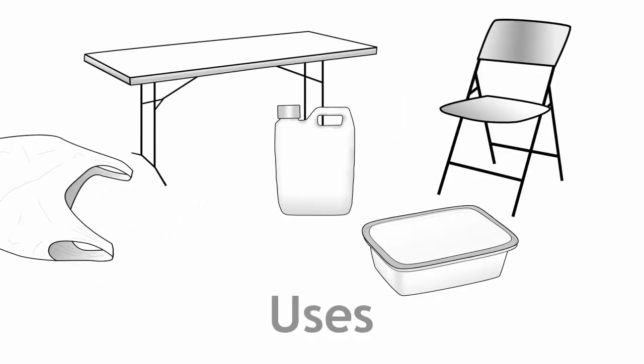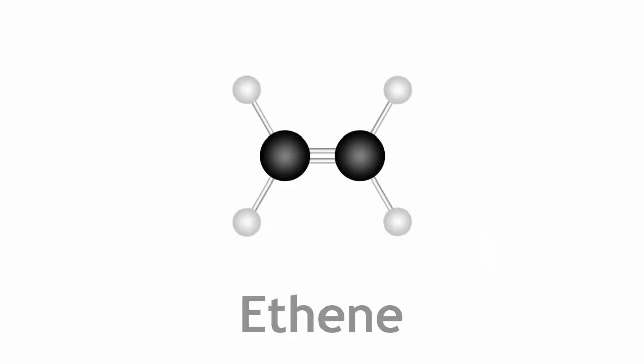Polyethene is formed by the polymerization of ethene. Ethene is an alkene with two carbon atoms joined by a double covalent bond.